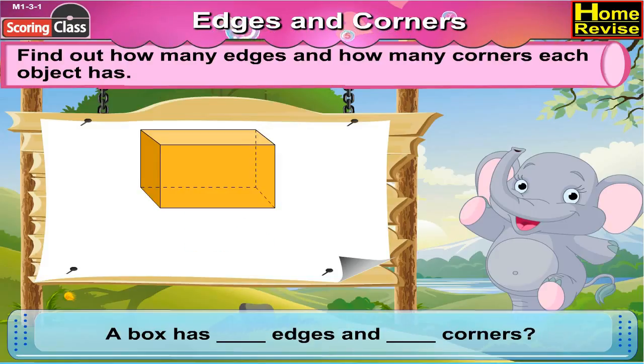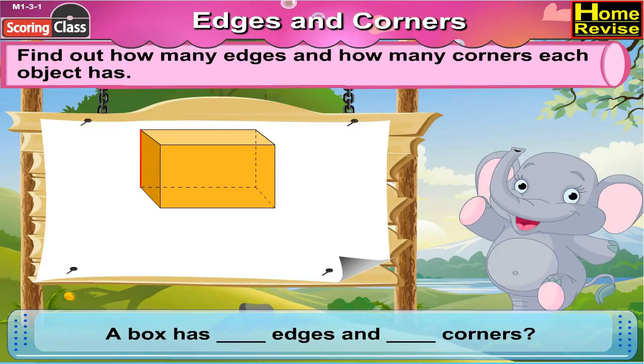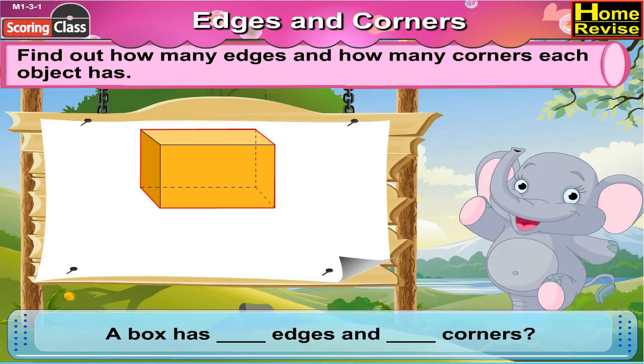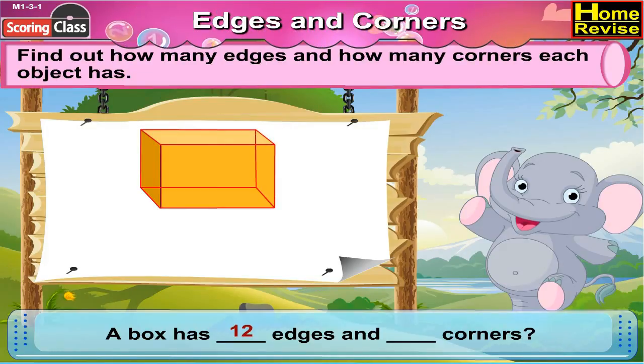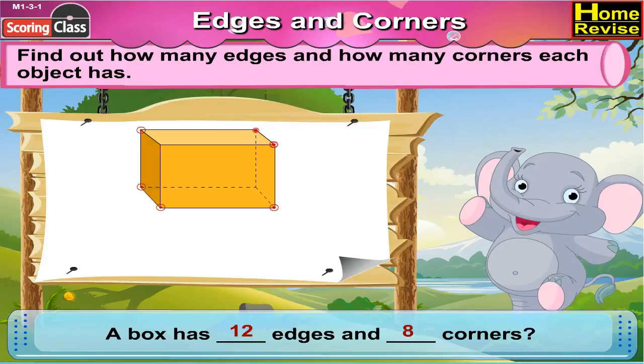A box has how many edges and how many corners? You're right. A box has twelve edges and eight corners.